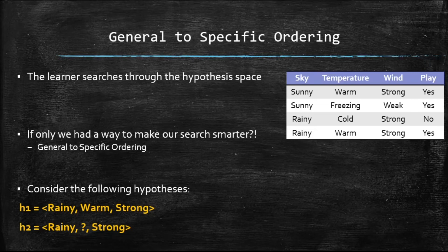Consider the following hypotheses. H1 says, I want the examples to have rainy for sky, warm for temperature, and strong for wind. However, hypothesis number two, H2, says that all the examples that could satisfy me have to have, they must have, rainy for sky, strong for wind, and I don't care what type of temperature that particular example has.